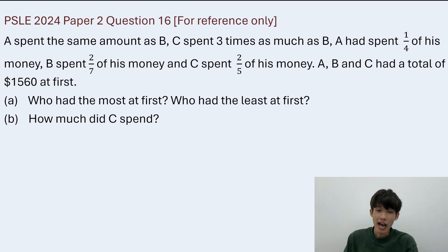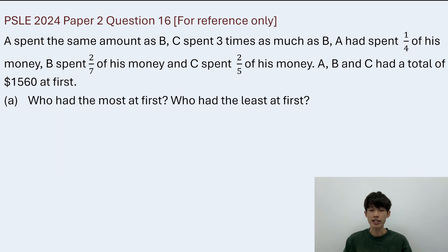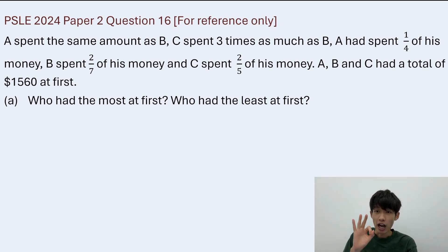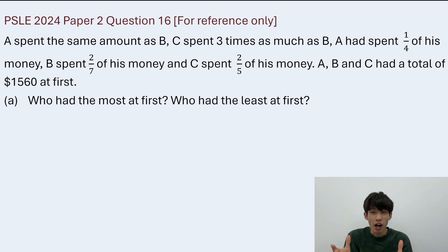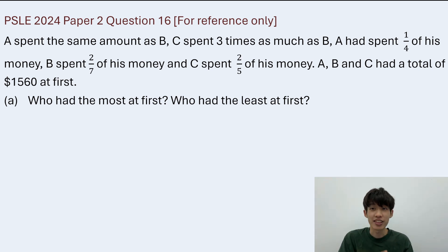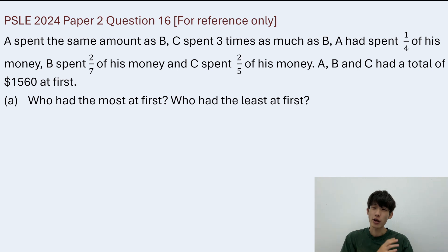Now let's try to solve question A first. Inside this question we have 3 people, and all these 3 people have spent some fraction of their money. So what should we do to visualize all this information? We should draw the model. Let's try to draw the model for A, B, and C.